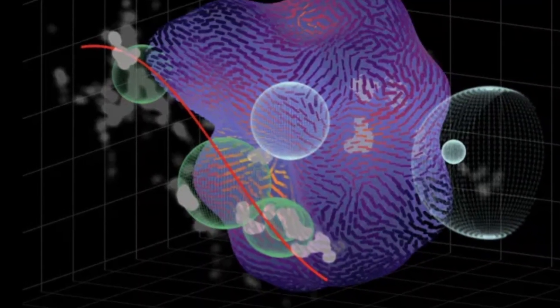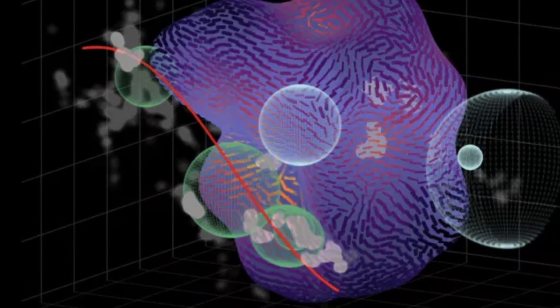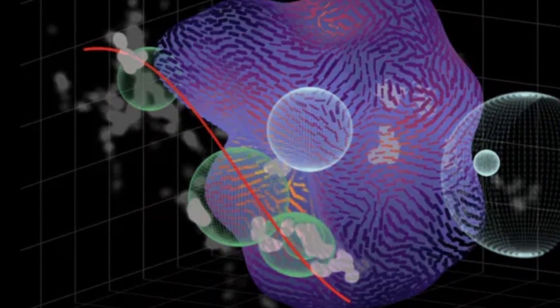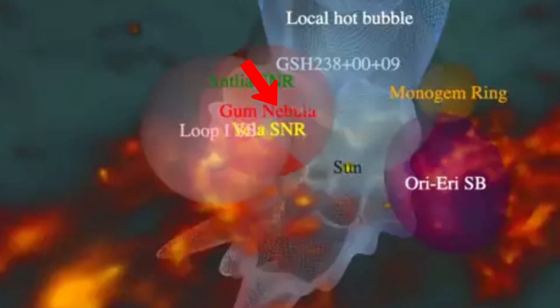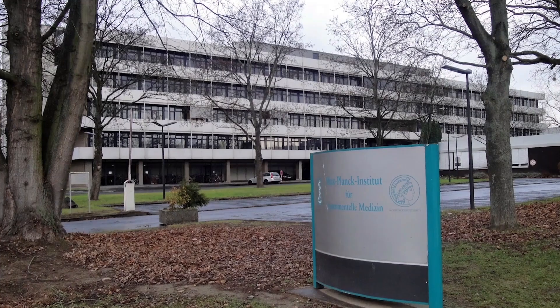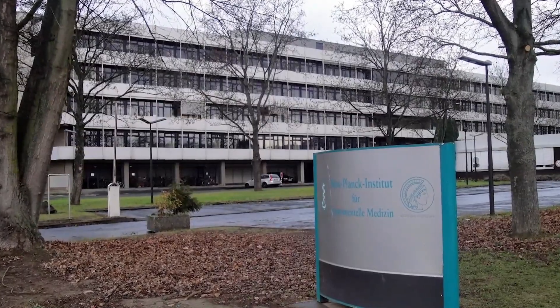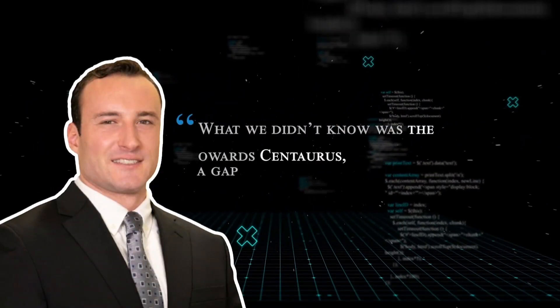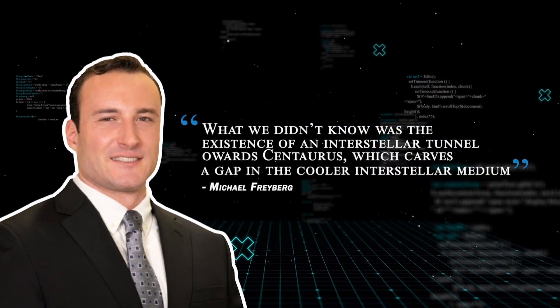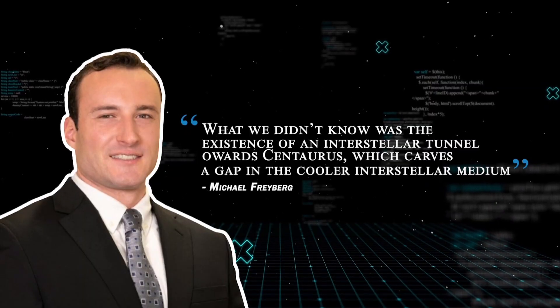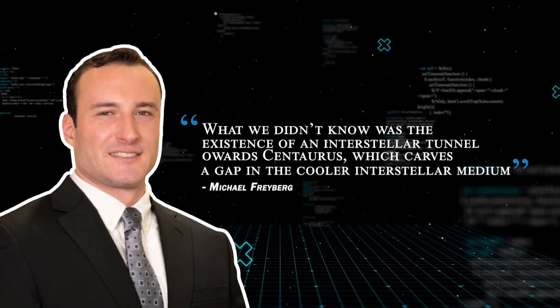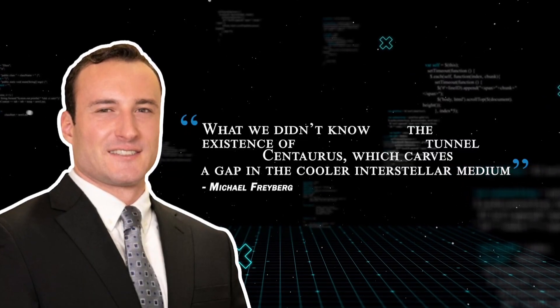However, researchers don't yet know where this tunnel leads. It could connect to other cosmic structures like the gum nebula, neighboring bubbles, or molecular clouds. Study co-author Michael Freiberg, an astronomer at Germany's Max Planck Institute for Extraterrestrial Physics, said in a statement that what we didn't know was the existence of an interstellar tunnel towards Centaurus, which carves a gap in the cooler interstellar medium.